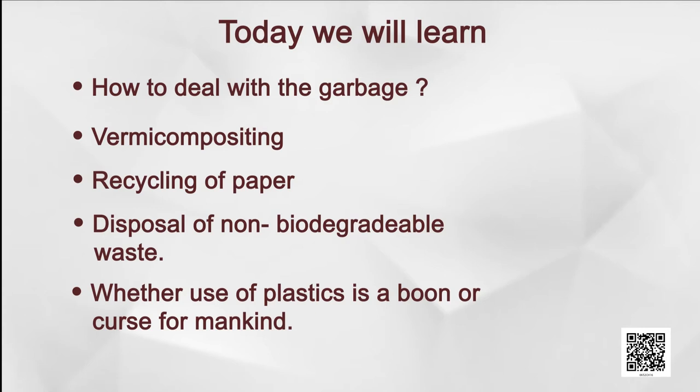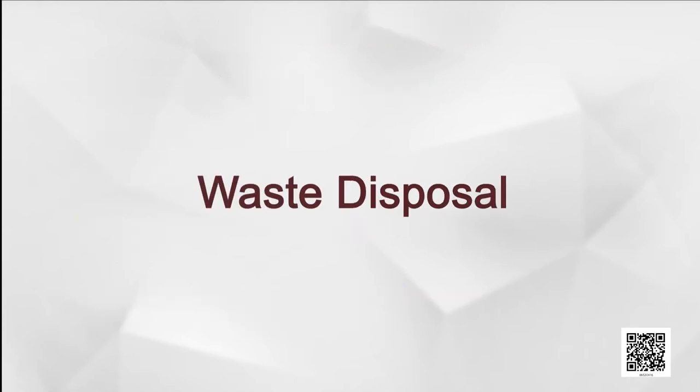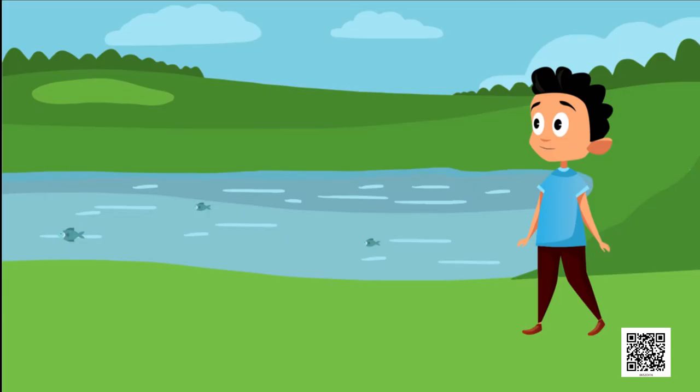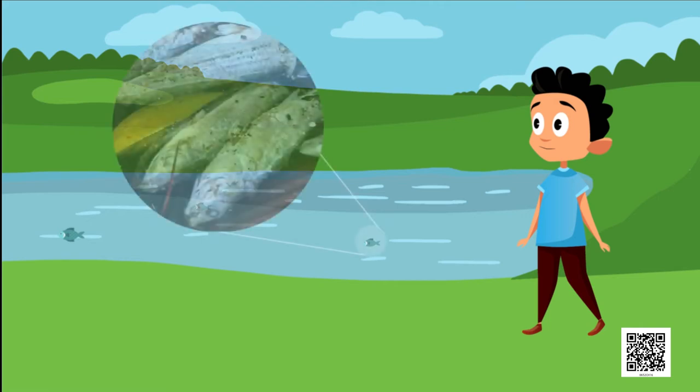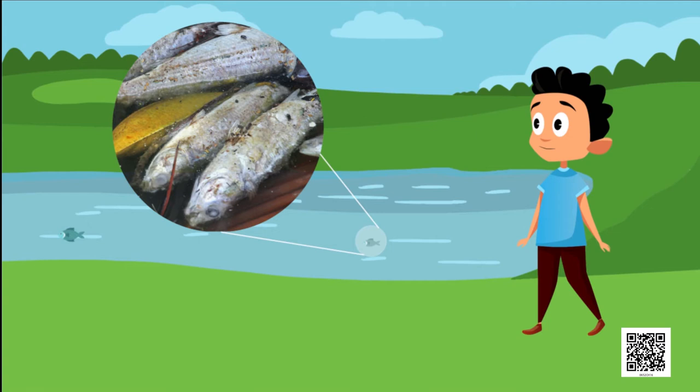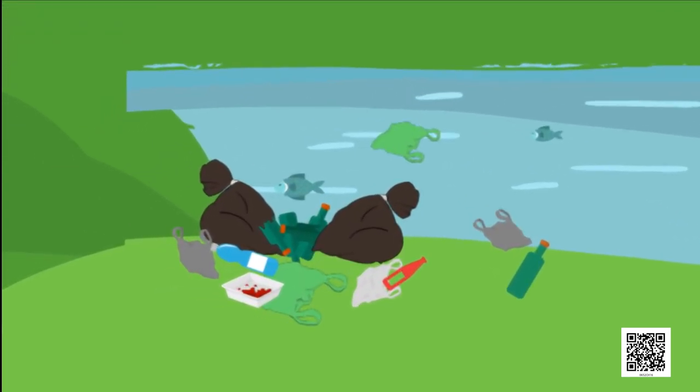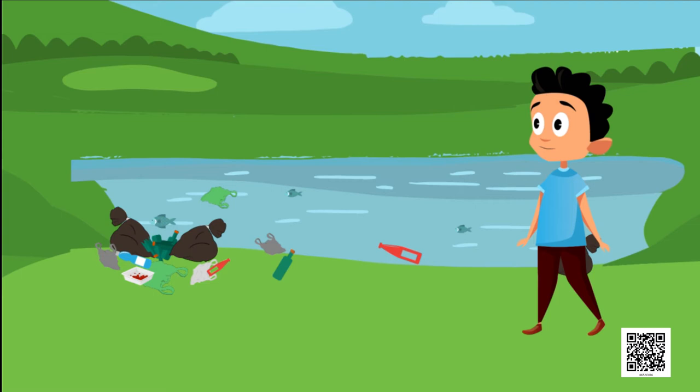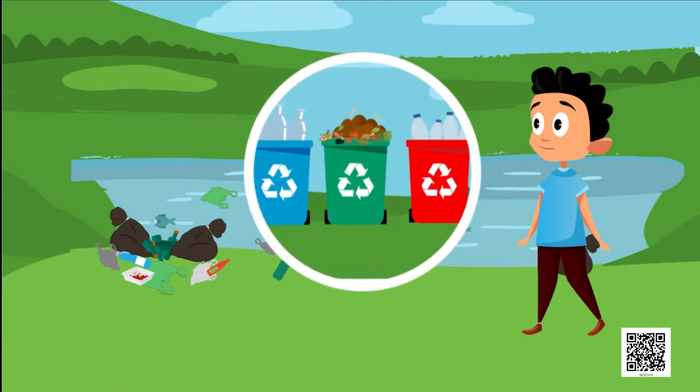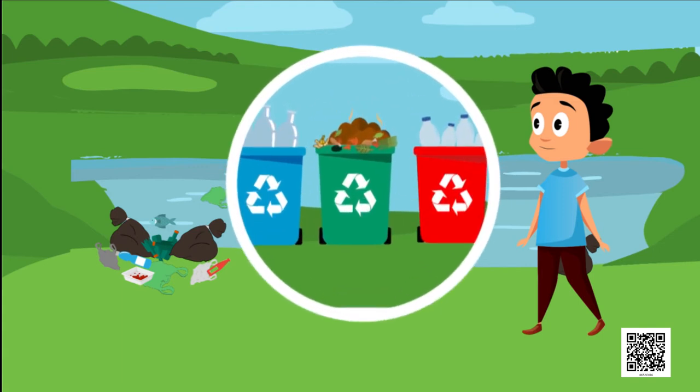So let us first discuss about the waste disposal in detail. Deepak one day noticed that the fish living in the pond near his house were dying one after the other. He then tried to find the reason behind this and was very sad to find that the garbage thrown by people in the pond was actually responsible for the deaths. So Deepak thought that to save the life on earth, proper management and disposal of waste is very essential.